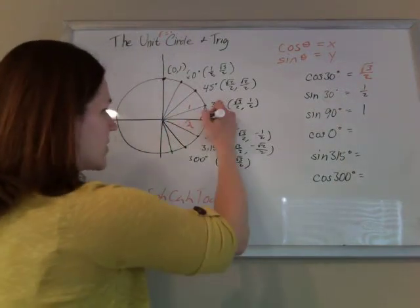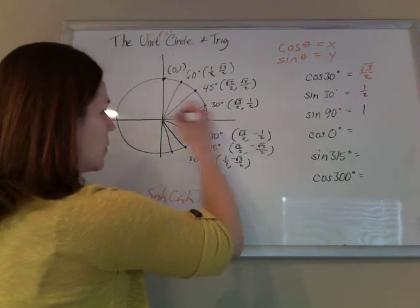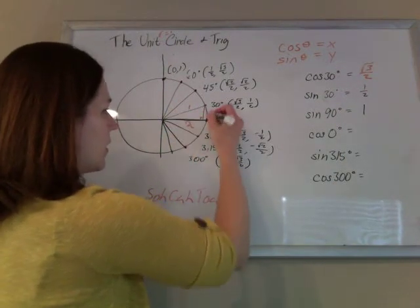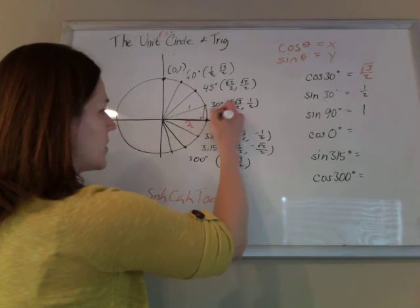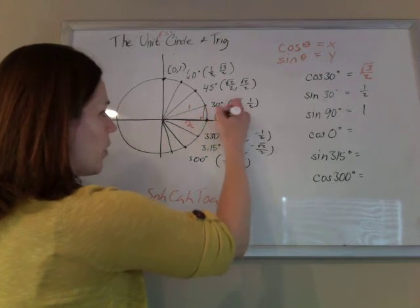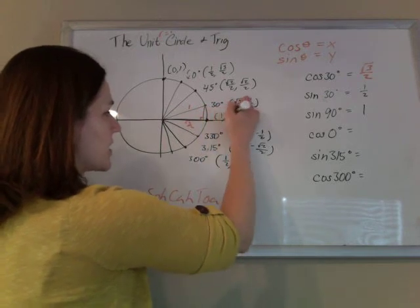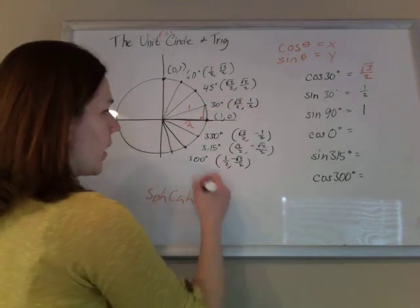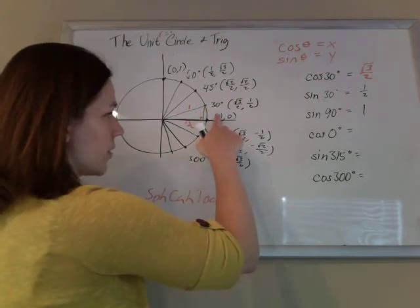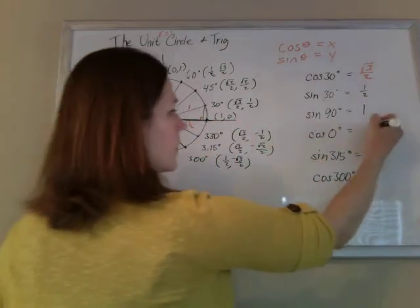The cosine of 0 — if I label an angle of 0 — that's 1 on the x and 0 on the y. So the cosine of 0 is 1.